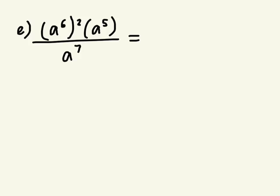Next: 8 to the power of 6 to the power of 2, times 8 to the power of 5, divided by 8 to the power of 7. What do we want to simplify first? 8 to the power of 6 to the power of 2. What does that become? 8 to the power of 12.